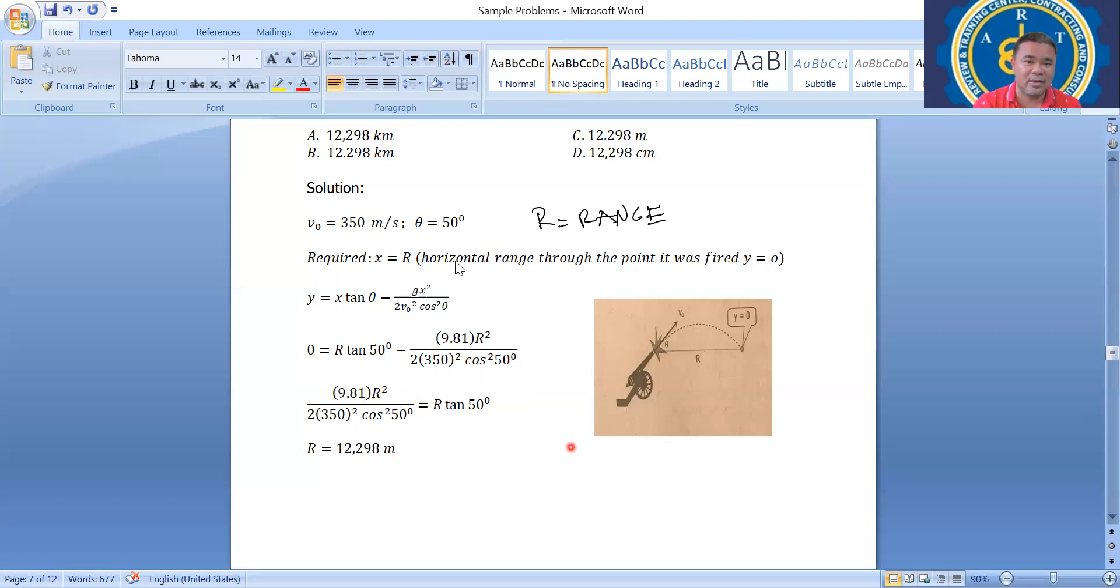This is the value of r equals 12,298 meters. So this is the r from firing. The r equals 12,298 meters.